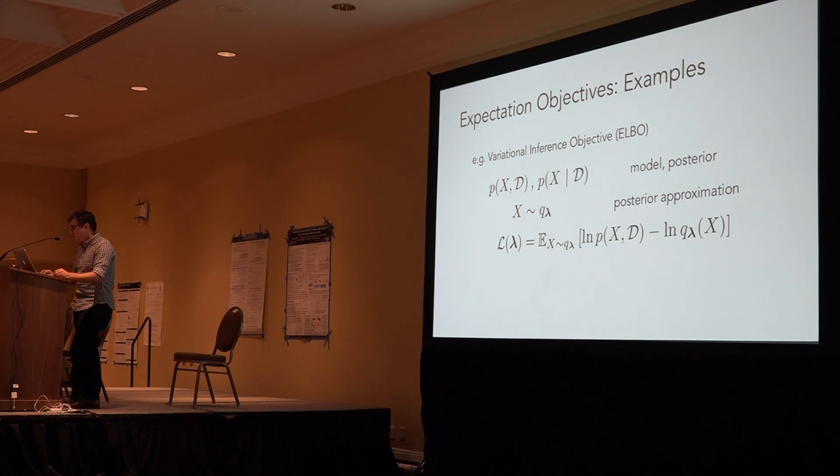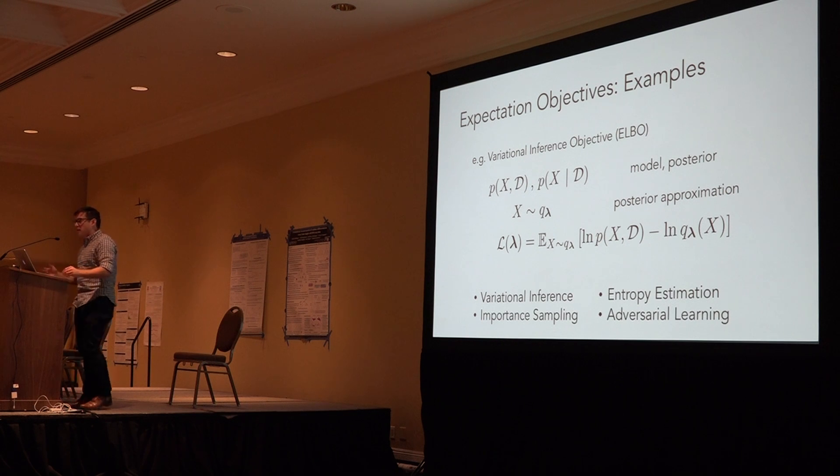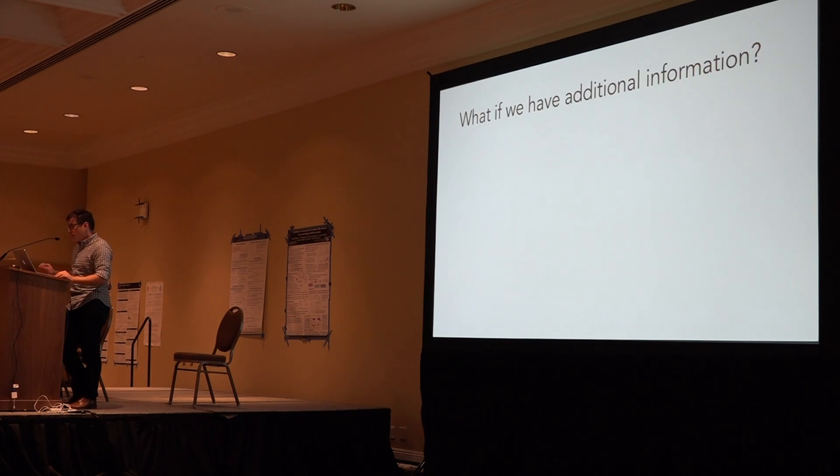People here are likely familiar with this particular example, but there are plenty of settings where these expectations come up. In importance sampling, variants of importance sampling, we take an expectation with respect to some proposal distribution. In Bayesian optimization, we want to estimate the entropy of a particular distribution from samples. In adversarial learning, you can view each competing objective function as an expectation with respect to a different empirical distribution or with respect to a generative model.